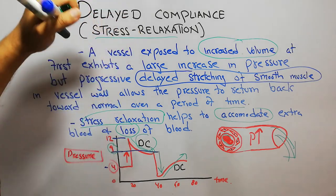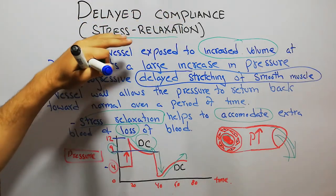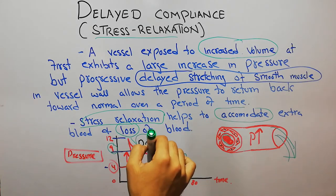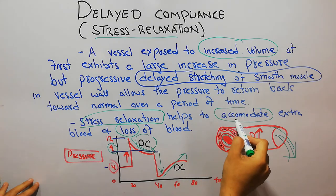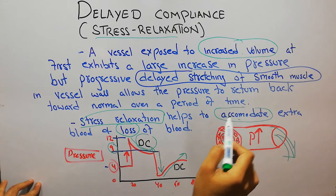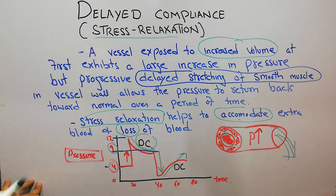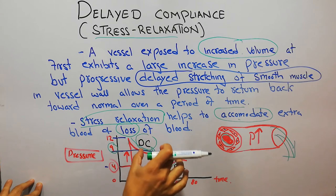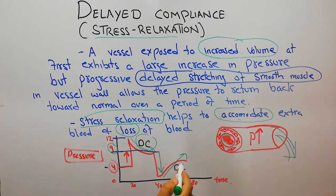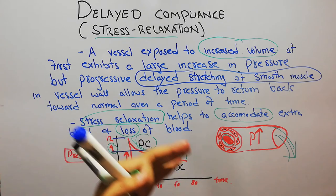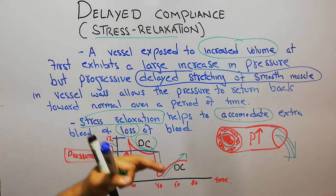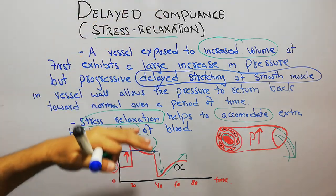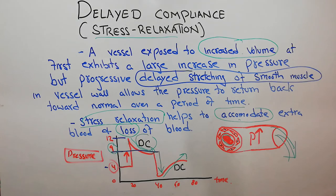Stress relaxation helps to accommodate extra blood and compensate for blood loss. The importance or advantage of delayed compliance is that when we inject a lot of blood into the veins, the veins are able to accommodate that blood without causing much increase in blood pressure. Similarly, when there is loss of blood, the veins are able to maintain their pressure without any injection of extra blood.